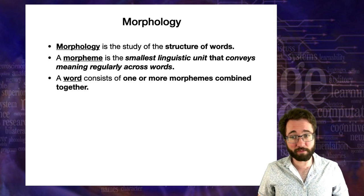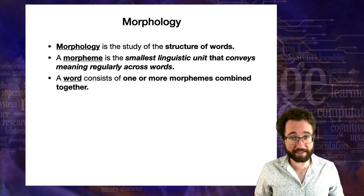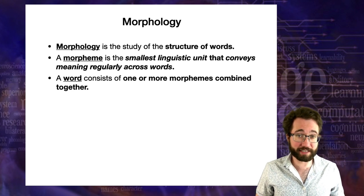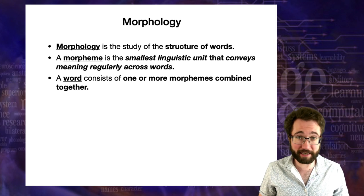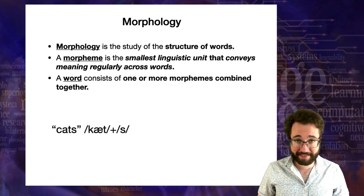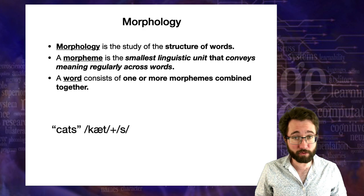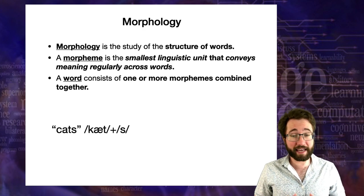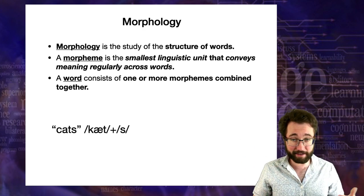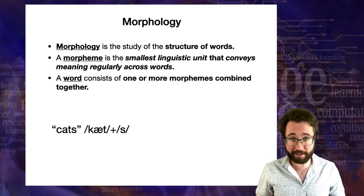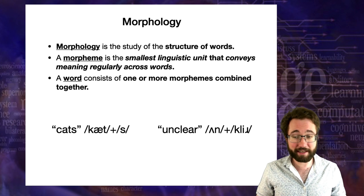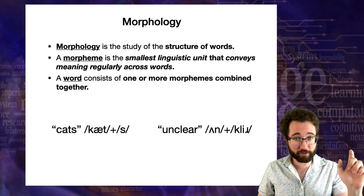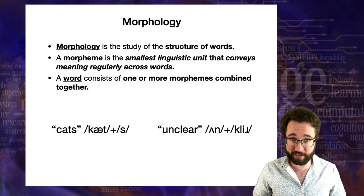A word consists of one or more morphemes combined together in various ways. We've looked at affixation, and we're going to look at other ways of combining morphemes today. For example, the word 'cats' in English consists of two morphemes: 'cat', indicating the feline creature, and the plural 's', indicating plurality. In 'unclear', you have the morpheme 'un', which means not, and 'clear', which means you can see through it.